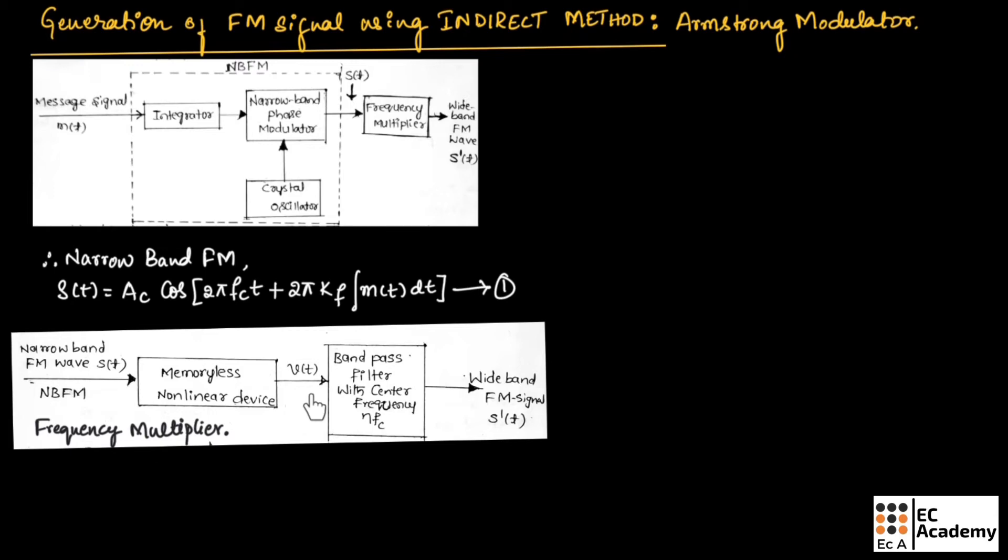This is the block diagram of frequency multiplier. Frequency multiplier consists of a memoryless non-linear device, which is followed by a band pass filter with center frequency n·fc. The output of band pass filter will be a wide band FM signal that is indicated by S'.